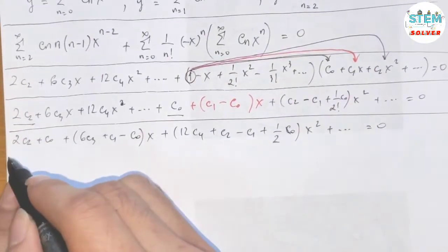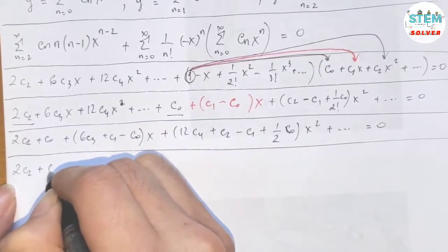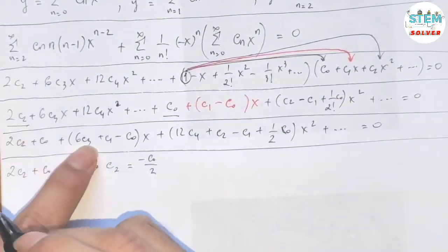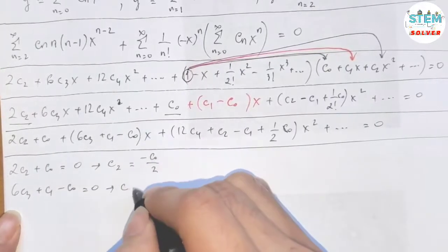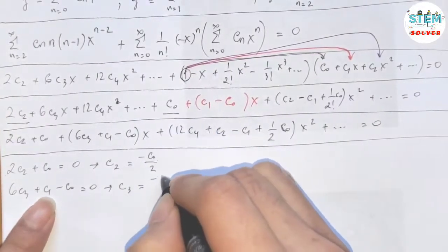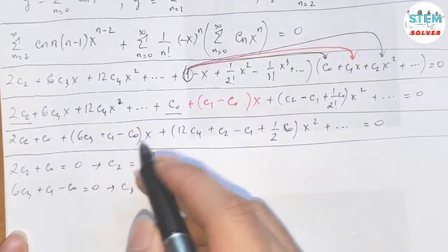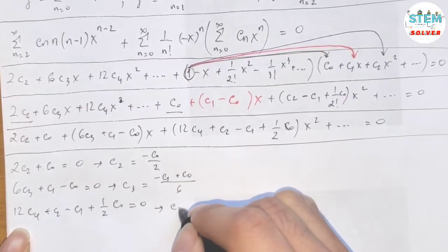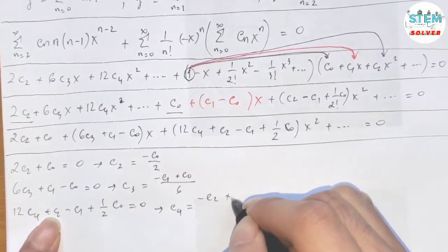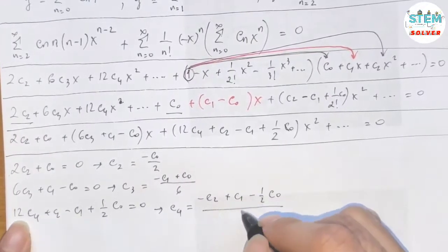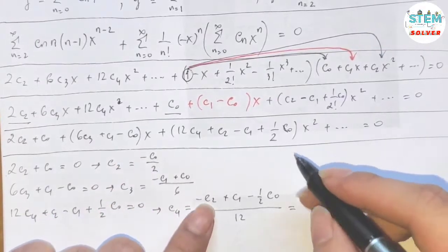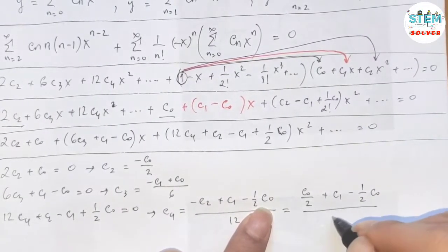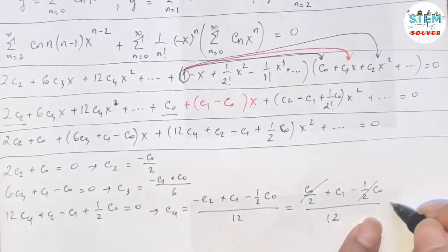Now equate coefficients. Setting the constant term to zero: 2c_2 plus c_0 equals 0, so c_2 equals negative c_0 over 2. For the x term: 6c_3 plus c_1 minus c_0 equals 0, so c_3 equals negative c_1 plus c_0, all over 6. For the x squared term: 12c_4 plus c_2 minus c_1 plus 1 half c_0 equals 0, so c_4 equals negative c_2 plus c_1 minus 1 half c_0, all over 12. Substituting c_2 equals negative c_0 over 2, the c_0 terms cancel and I'm left with c_4 equals c_1 over 12.